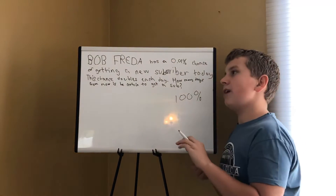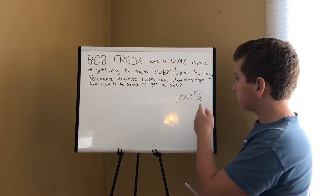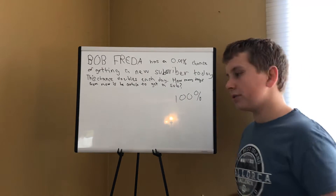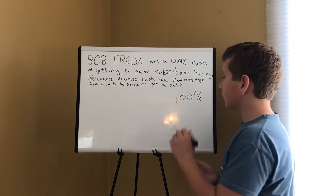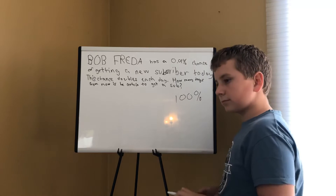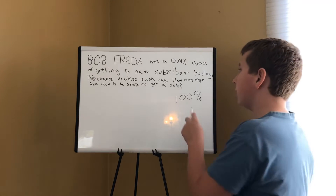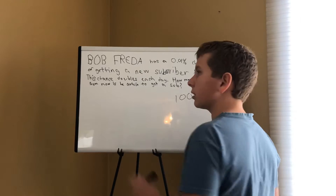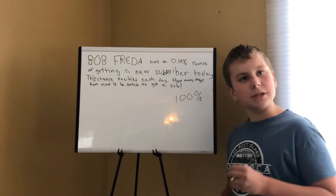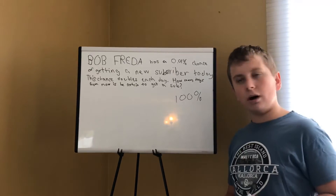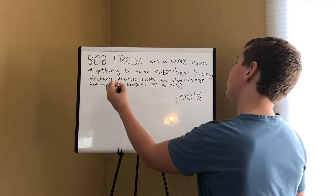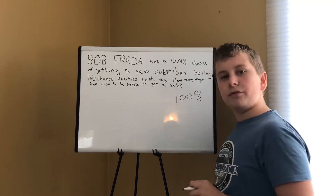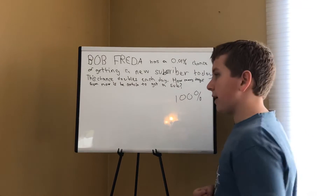Right now we are at 0.01, so we will have to multiply 0.01 by 10 to the 4th — that's 10,000 — to get to 100. So we've got to actually find the smallest power of 2, because remember his chance doubles. We've got to find the smallest power of 2 that is over 10,000.